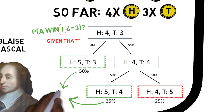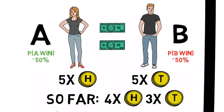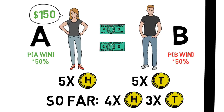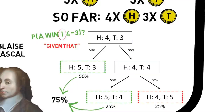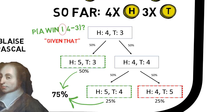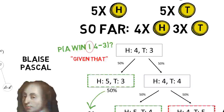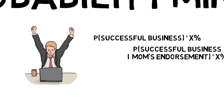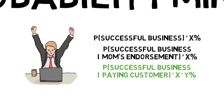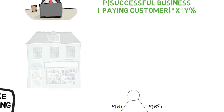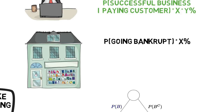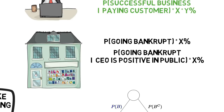Moreover, this would also mean that if A was a betting person, she would want to be offered at least $150 to end the game in this situation, or 75% of the total betting pool. You are faced with decisions that can be analyzed with probability trees and conditional probabilities every day, even though it's never as clear-cut as this example. What's the probability that your business idea will succeed? How does that probability change given that your mom tells you it's a great idea? How does it change given that you had your first paying customer? What's the probability that one of the companies you invest in goes bankrupt? How does this probability change given that the CEO, in the annual letter, tells you he is hopeful for the future? How does the probability change given that the CEO himself sells a ton of shares in the company?